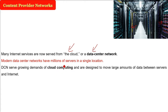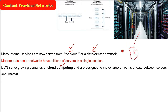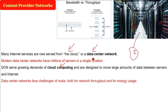This DCN — the data center network — is designed to transfer or move large amounts of data between these servers and the internet. Data center networks face certain challenges, like the need to scale by adding more servers, to increase network throughput, and to have an energy-efficient way of working.